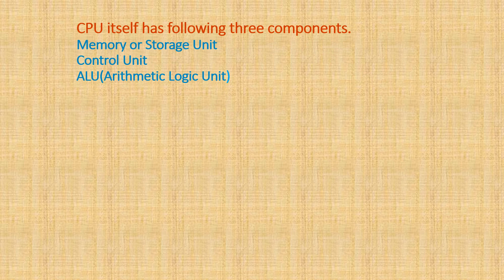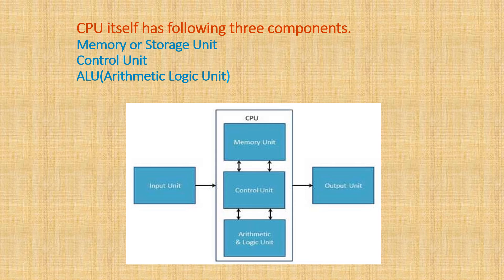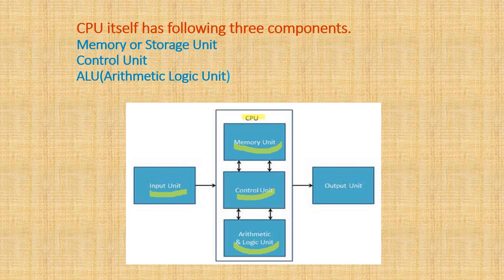The CPU itself has the following three parts: memory or storage unit, control unit, and ALU, which stands for Arithmetic Logic Unit. As you can see in the picture, there is an input unit, meaning we give input to the computer. Inside the CPU, there is a memory unit, a control unit, and an Arithmetic Logic Unit, and together these units produce the output.